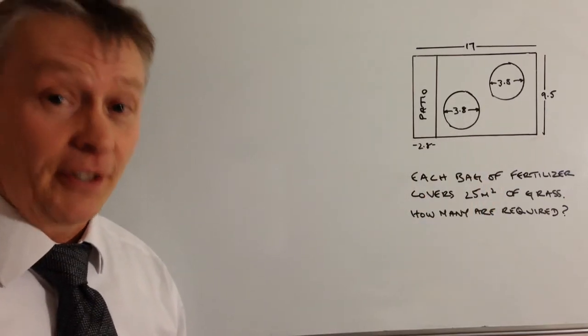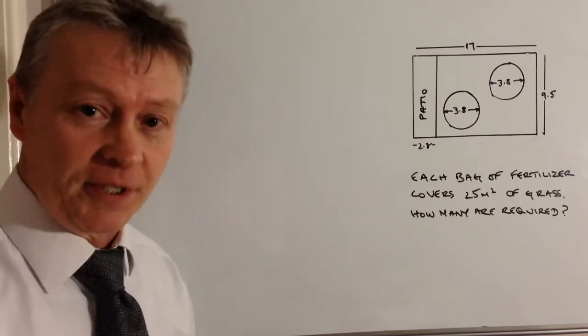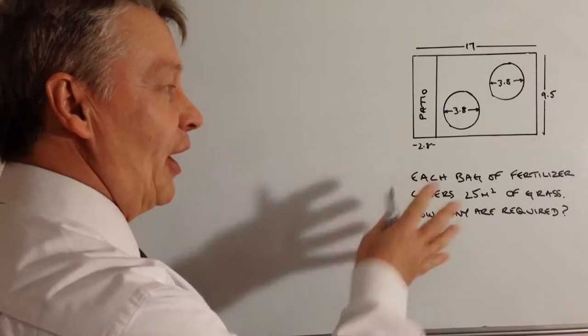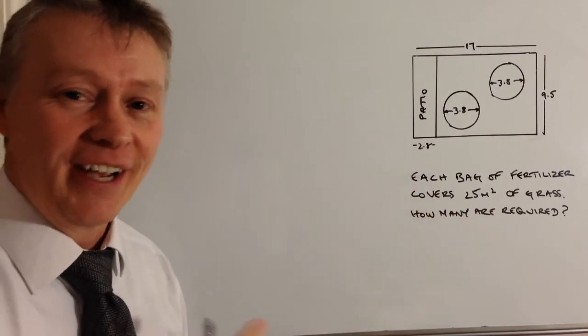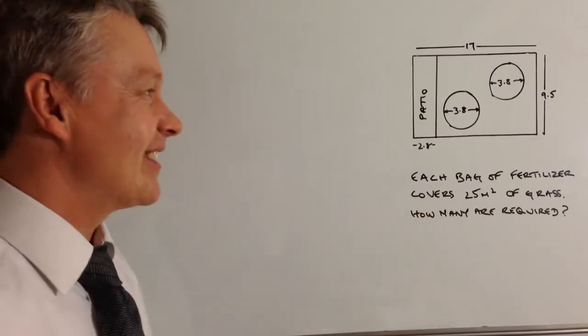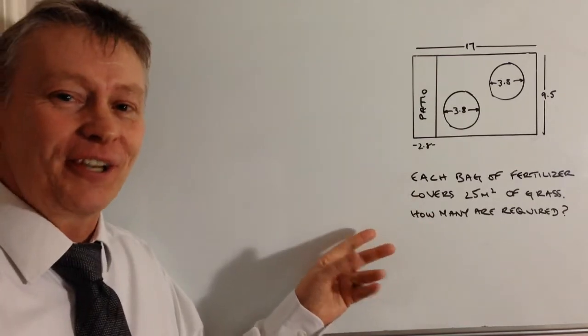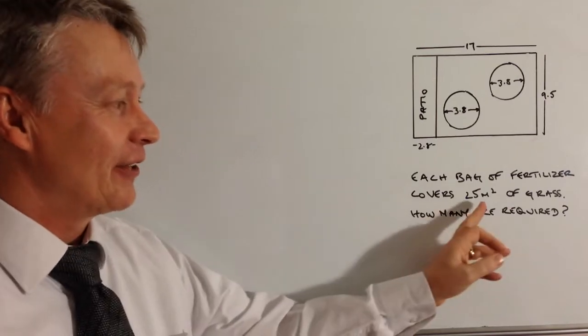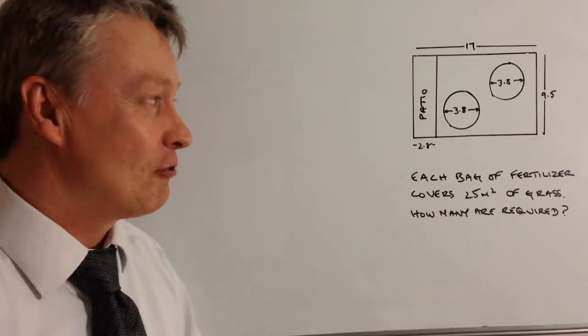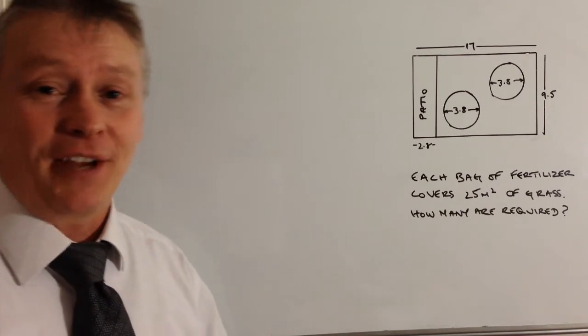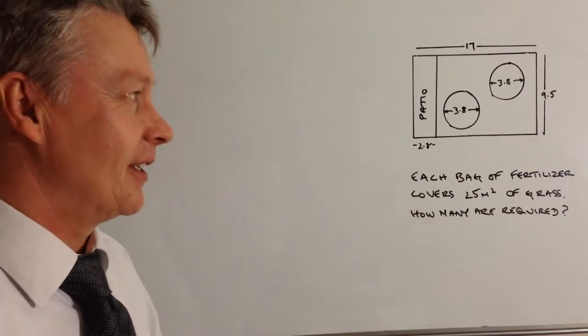Now, if you go and follow the link in the description, you'll be able to go to this particular question and have a go at it for yourself. And then hopefully, as you work through the video, it should agree with what you're working out. Okay, so the question really deals with bags of fertiliser. Each bag of fertiliser covers 25 metres squared of grass. How many are required? So we need to really work out the area of grass in this particular garden.